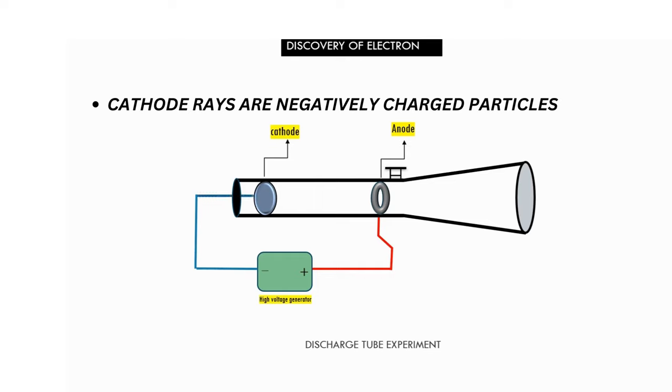Cathode rays consist of negatively charged particles because rays deflect towards the positive plate when the tube is exposed to an electric field.